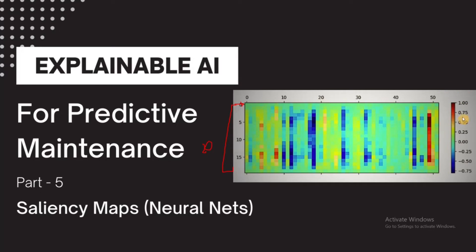The heatmap generated by the saliency map shows which particular values are important for the prediction output class. The red values — where the highest importance is — are contributing the most to the output. This particular feature has the highest contribution throughout time, while another feature has a negative impact on that class. Now we'll understand what saliency maps are, how to compute them, and implement them in Jupyter Notebook for the Tennessee Eastman process data.